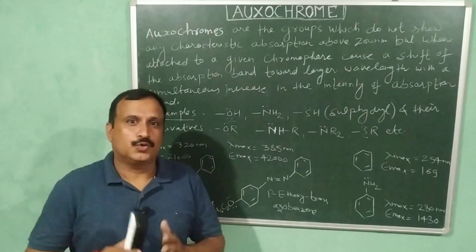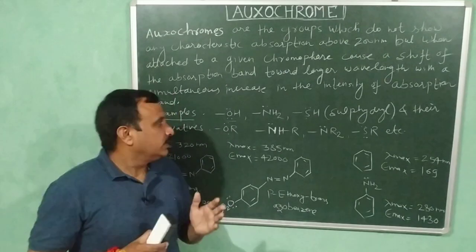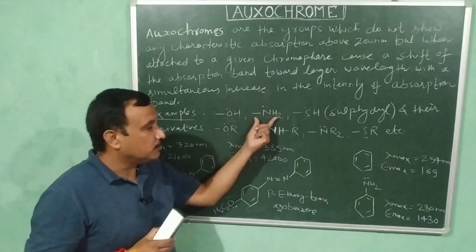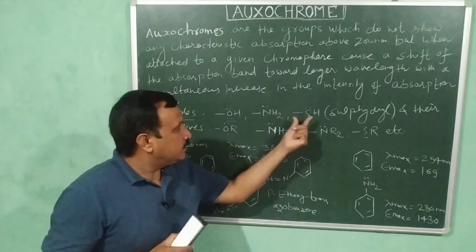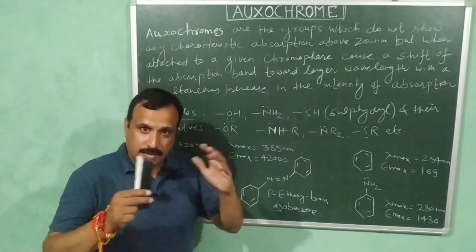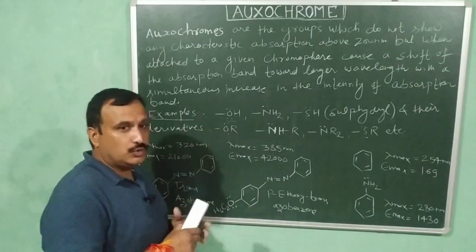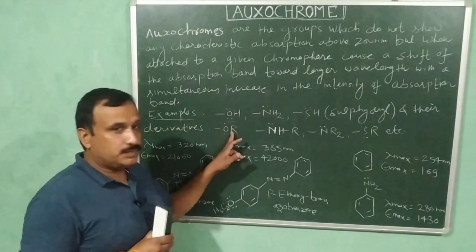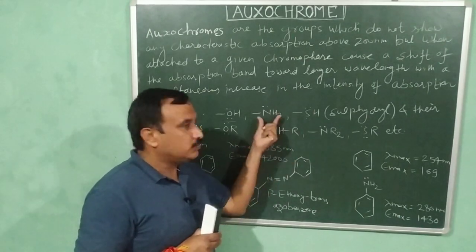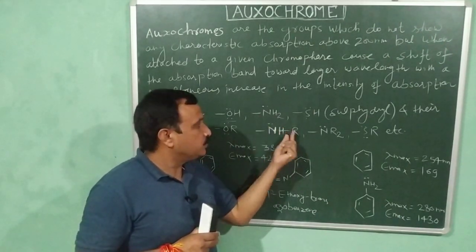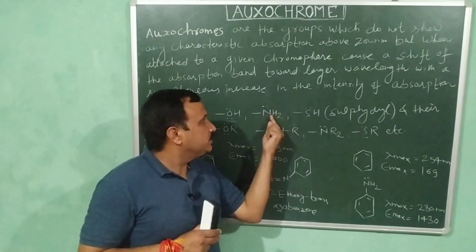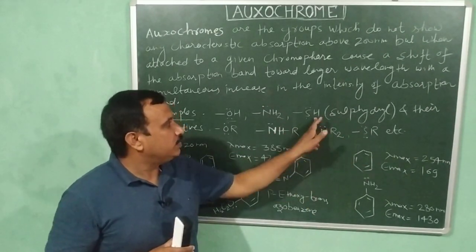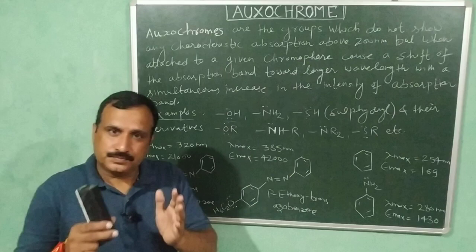Here are some examples of oxochromes. The first is the hydroxy group (–OH), then the amino group (–NH₂), then the sulfhydryl group (–SH), and their derivatives — the alkoxy group, which is derived from the hydroxy group by replacing its hydrogen with an alkyl group. We also have monoalkylamino and dialkylamino groups derived from the amino group by replacing one or both hydrogens with alkyl groups, and an alkylsulfide group derived from the sulfhydryl group.